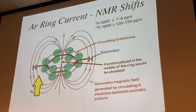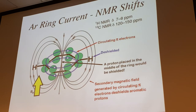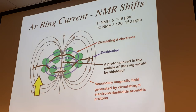The ring current produces a toroidal magnetic field. On the periphery, this de-shielding effect adds to the external magnetic field, so any hydrogens on the outside of an aromatic ring are shifted to higher frequency - way down at 7-8 ppm. This magnetic anisotropy is part of how we detect aromatic structures. Interestingly, any hydrogen dangling over the middle of an aromatic ring becomes more shielded - shifted further upfield, sometimes even into negative ppm, a startling effect.